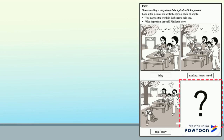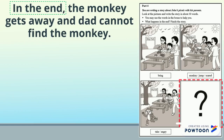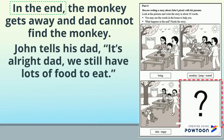Finally, I have to decide how the story ends. So I will begin by writing, in the end. What happens in the end? In the end, the monkey gets away and dad cannot find the monkey. In my story, I want to write something that John says. So I could write, John tells his dad, "It's all right, Dad, we still have lots of food to eat." Make sure you have your inverted commas and you have your comma and full stop.